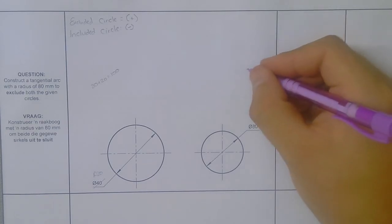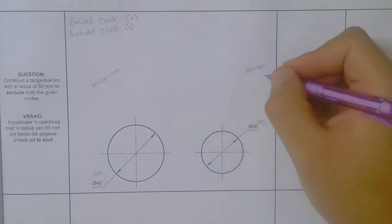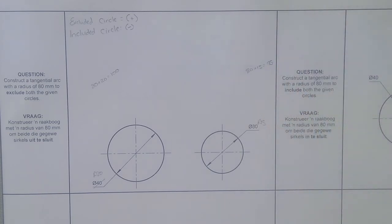Then on this side, again, 80 plus 15 gives me 95. So now we have the sizes of both of our angles.